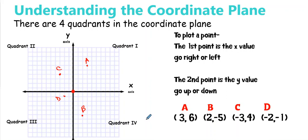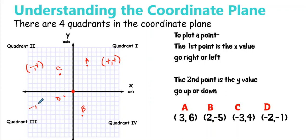Go back to where it says label the quadrants — I want to label the sign rules. In quadrant one, your x value and y value will always be positive. In quadrant two, your x value is negative but your y value is positive — so it looks like negative, positive. Quadrant three is negative, negative — both are negative. Quadrant four has a positive x value but a negative y — positive, negative. Make sure you write those in your notes.